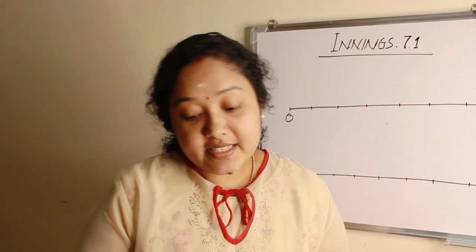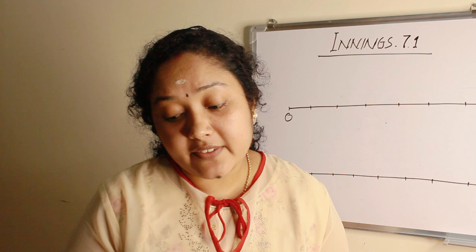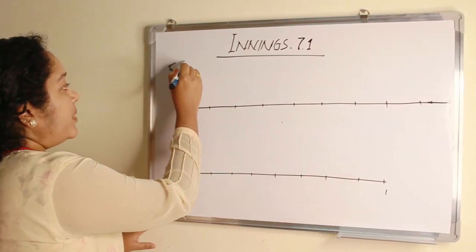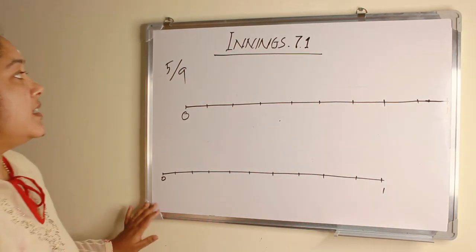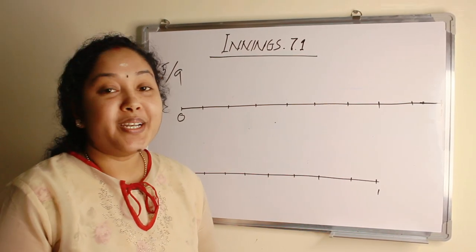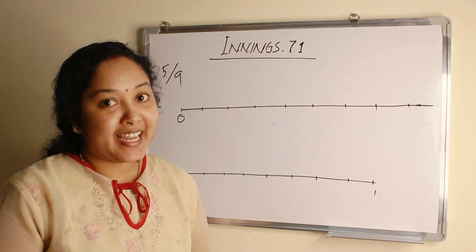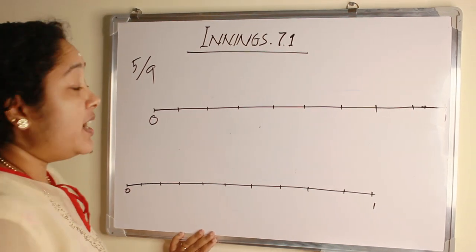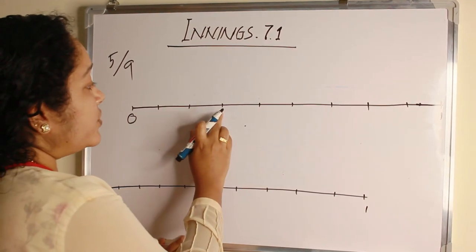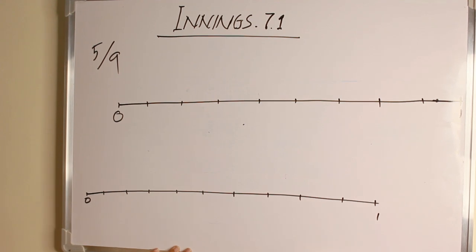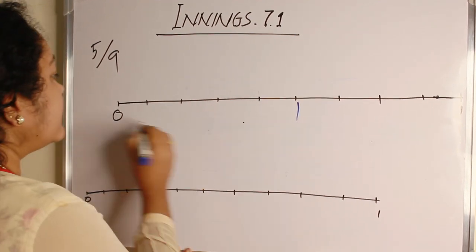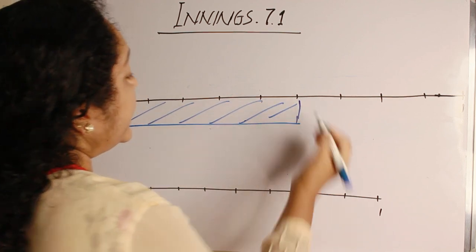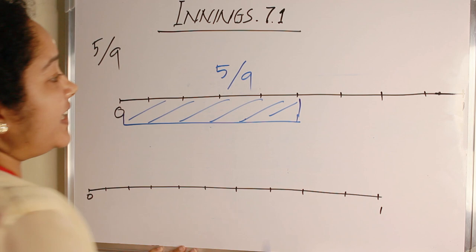Next section is drawing a number line and represent the given fraction on it. The first question is 5 by 9. The denominator is 9. So 1 unit is divided into 9 equal parts. And numerator is 5. So we mark 1, 2, 3, 4 and 5. Here it is. The shaded part is 5 by 9.